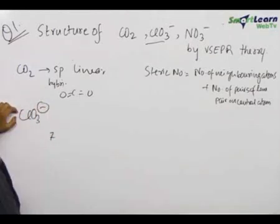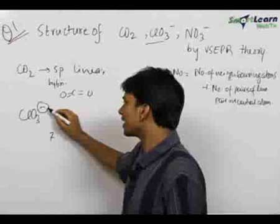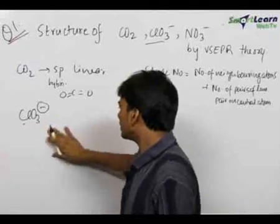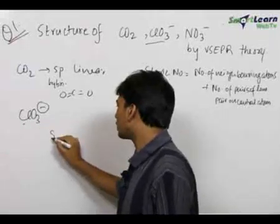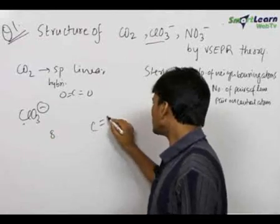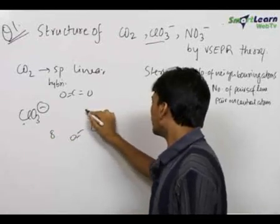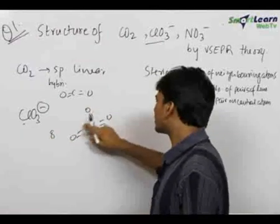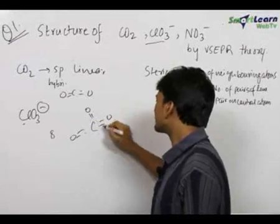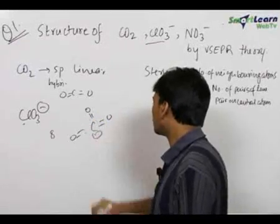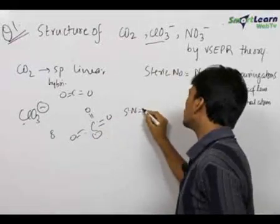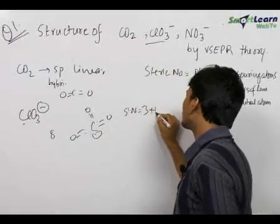This is an ion with an extra negative charge, which means there is an extra electron on the central atom — that is, in the outermost shell of chlorine. So now we have 8 electrons. Chlorine will bond with 3 oxygen atoms, so 6 electrons are occupied, and therefore it has one free lone pair. Therefore, the steric number is equal to 3 plus 1, which equals 4.